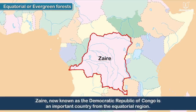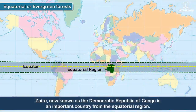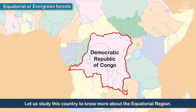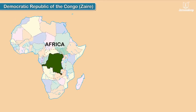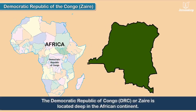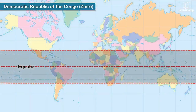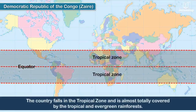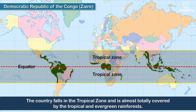Zaire, now known as the Democratic Republic of Congo, is an important country from the equatorial region. Let us study this country to know more about the equatorial region. The Democratic Republic of Congo, DRC or Zaire, is located deep in the African continent. The country falls in the tropical zone and is almost totally covered by the tropical and evergreen rainforests.